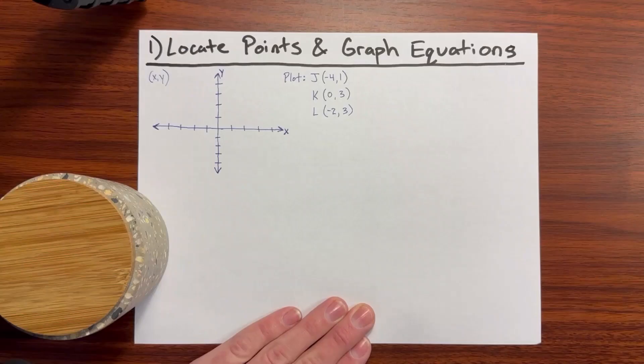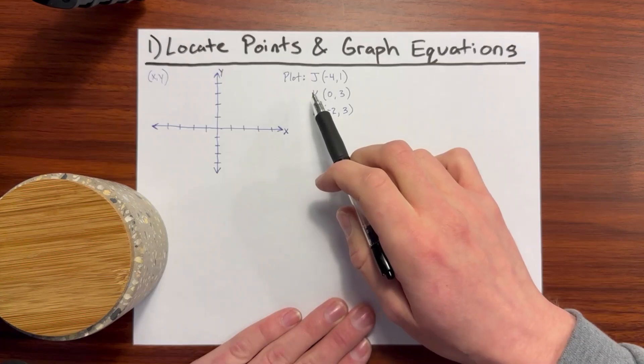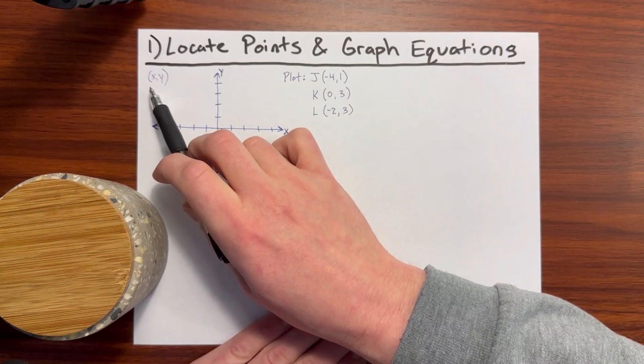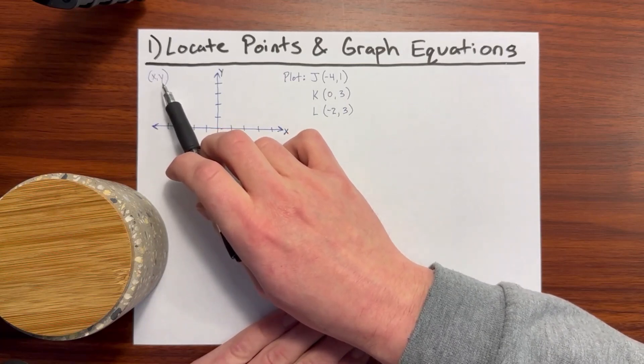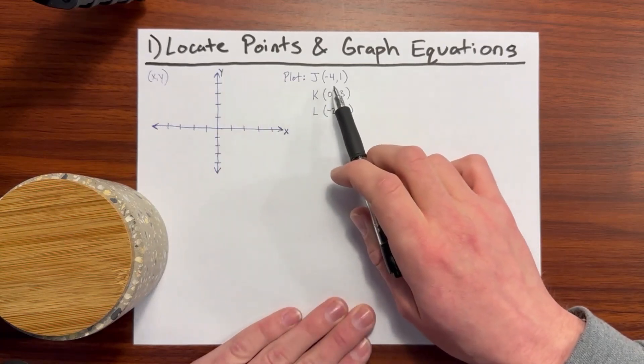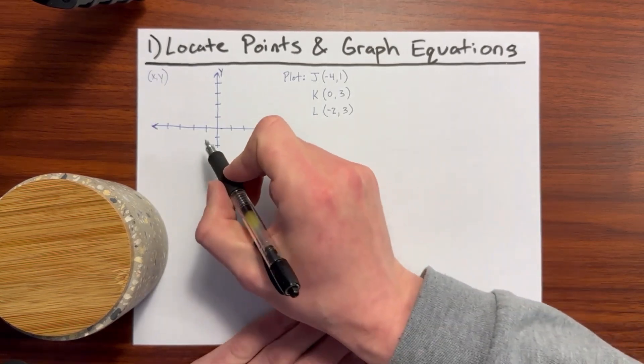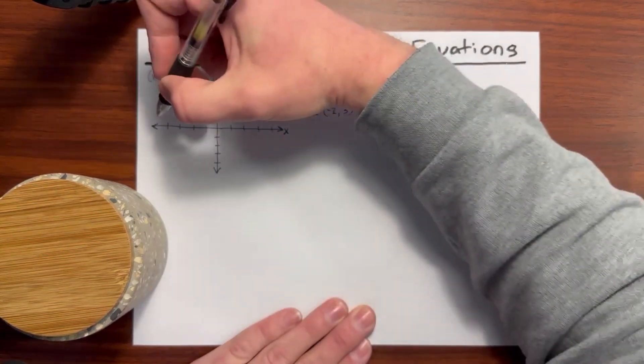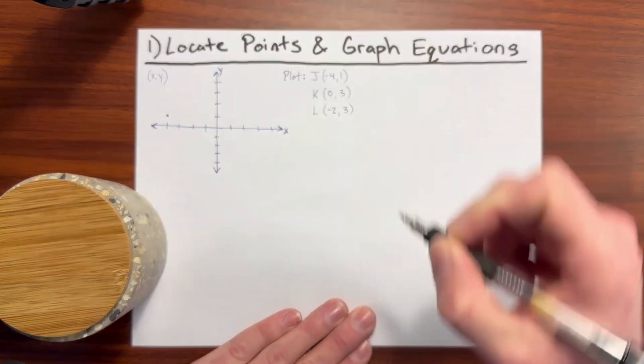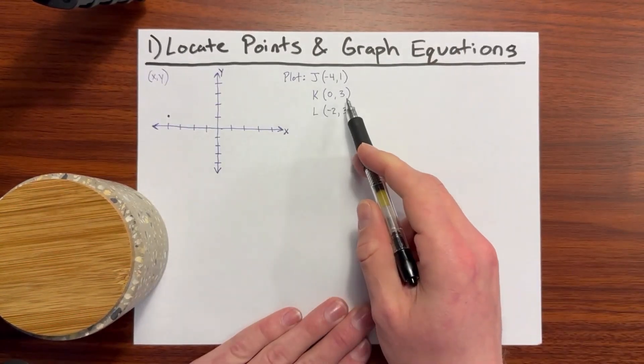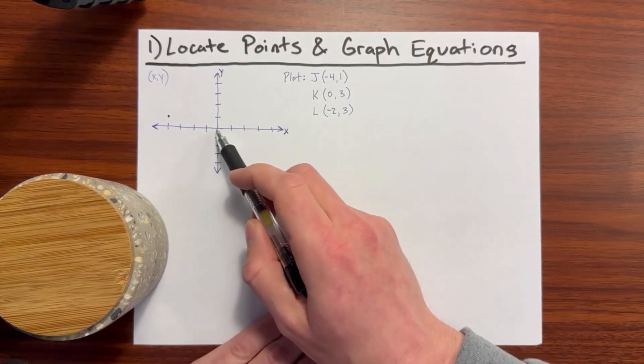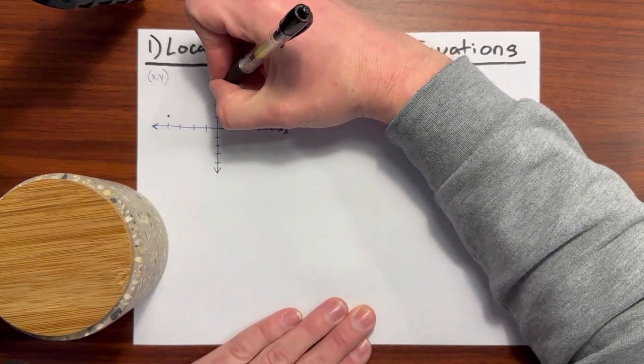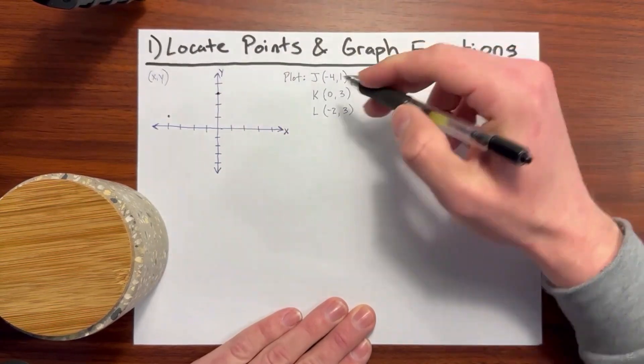Number 1: Locate Points and Graph Equations. Let's plot three points. We have the x-axis and y-axis, and when looking at points, the x variable will come first, followed by the y variable. So when we have negative 4, 1, we'll move back negative 4 on the x-axis and up 1 on the y-axis. So that would be right there. When we have 0, 3, we'll not move anywhere off the x-axis, so we stay in the center and go up 3 spots. So it would be 0, 3 right there.